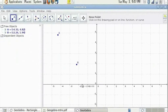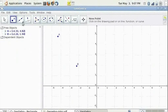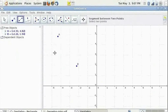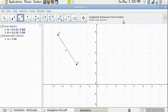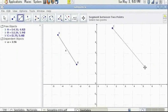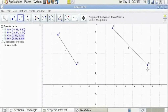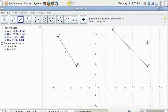You can draw a line segment by going to segment between two points using two existing points like A and B or click anywhere else on the drawing pad and you will get two new points and the segment between these two points.